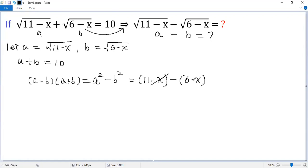Negative x minus negative x cancel out. 11 minus 6 is 5. But we know a plus b equals 10. So we get a minus b times 10 equals 5. Both sides divided by 10, so we get a minus b equals 5 over 10.